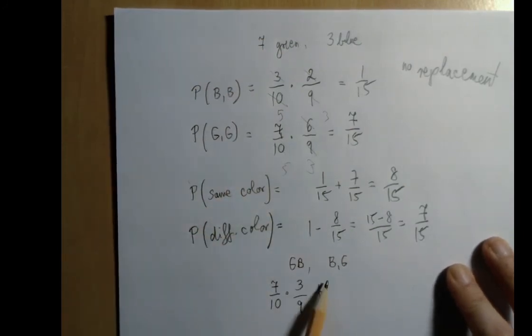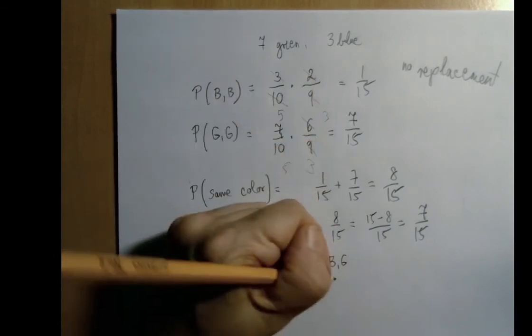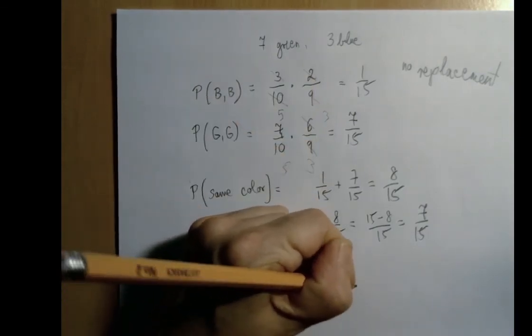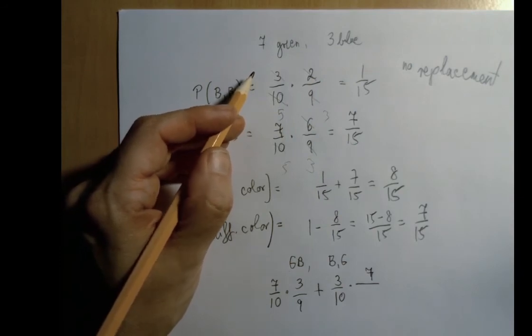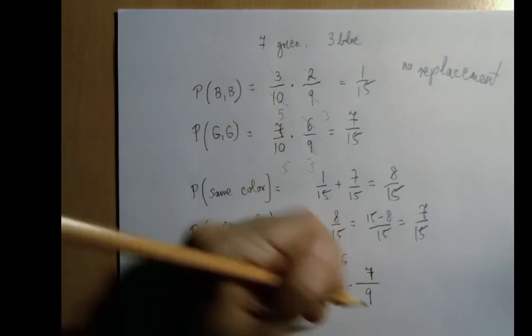Plus. Now when we start with a blue, that's 3 out of 10. And so for the green, all 7 of them are in the bag, but the bag only contains 9, so 7 out of 9.